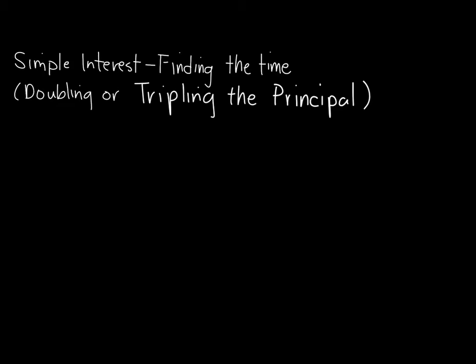So normally, when we have a problem on simple interest, what we're looking for is basically the interest. And that is simply found by multiplying the principal P, the rate of interest, and the time which is in years.